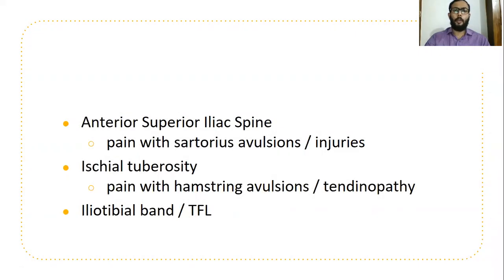Coming to bony landmarks, check the anterior superior iliac spine to check whether there is an avulsion, and the ischial tuberosity to check whether there are hamstring avulsions, and then check the iliotibial band.